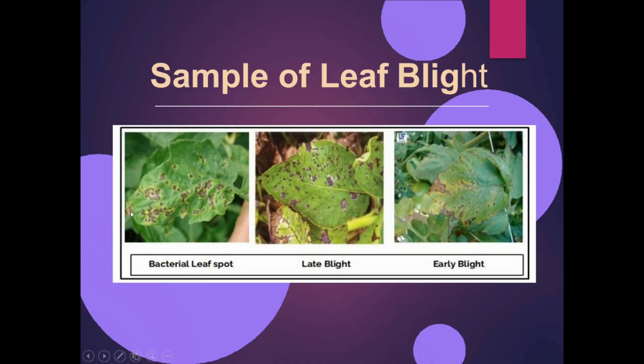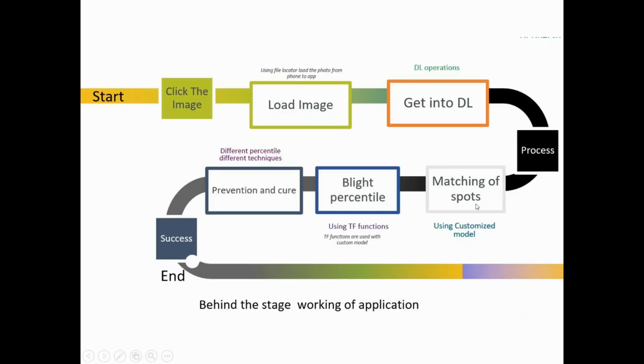Here is a sample of leaf blight. First, you can see bacterial leaf spot, then late blight, then early blight.